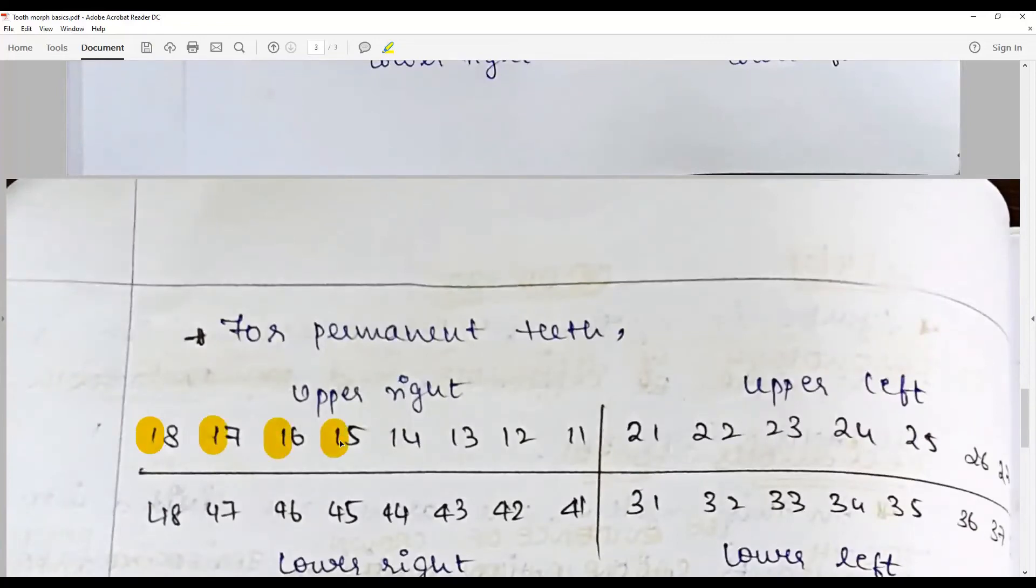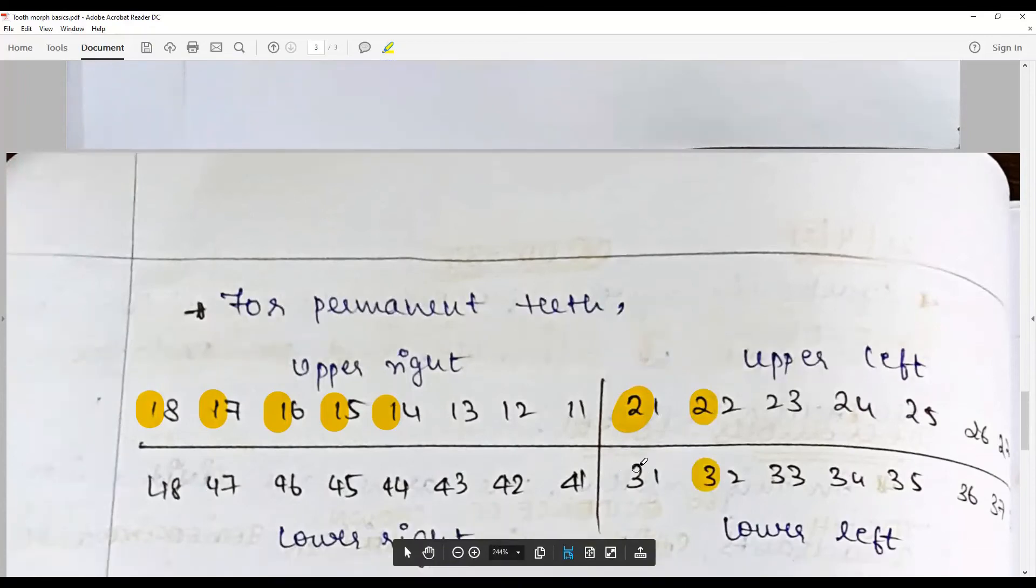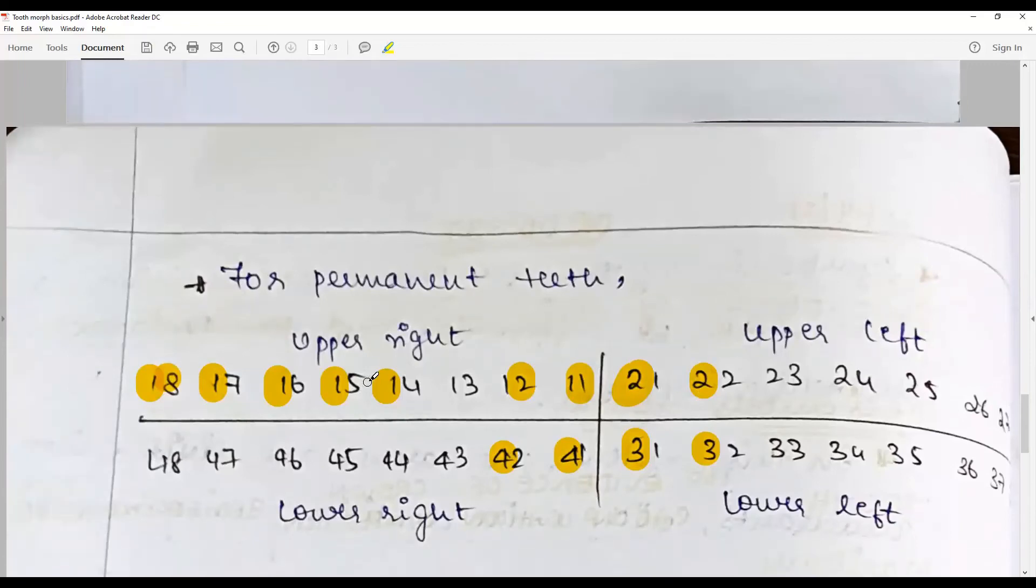Quadrant number is 1, upper left is given by quadrant number 2, lower left is given by quadrant number 3, and lower right is given by quadrant number 4. The second digit is the tooth, and lesser the number, closer to the midline.